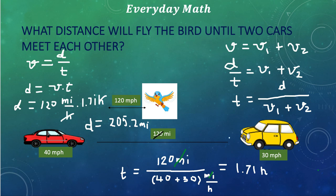So, until the two cars meet each other with the speed 40 miles per hour and 30 miles per hour, if the bird flies with a velocity of 120 miles per hour, until they meet with each other, the bird is going to make a distance of 205 miles.